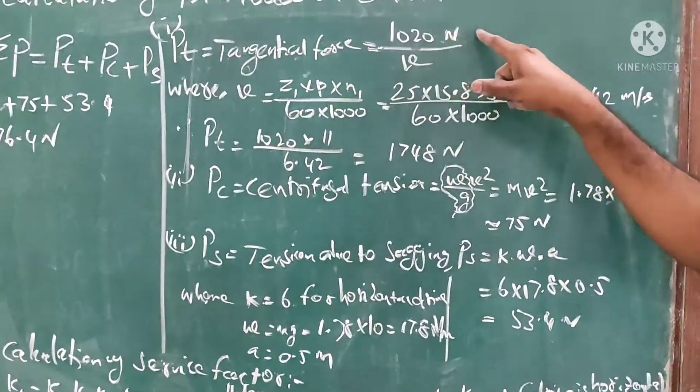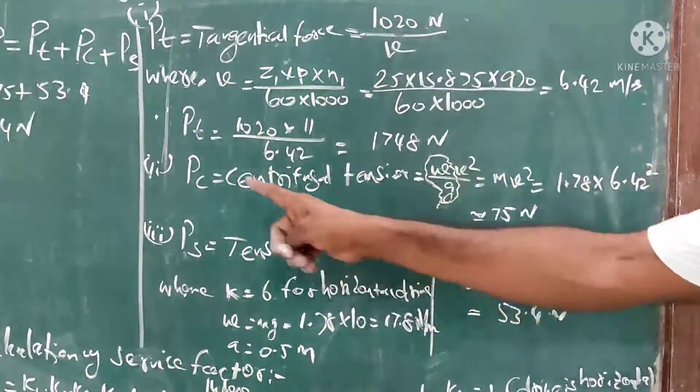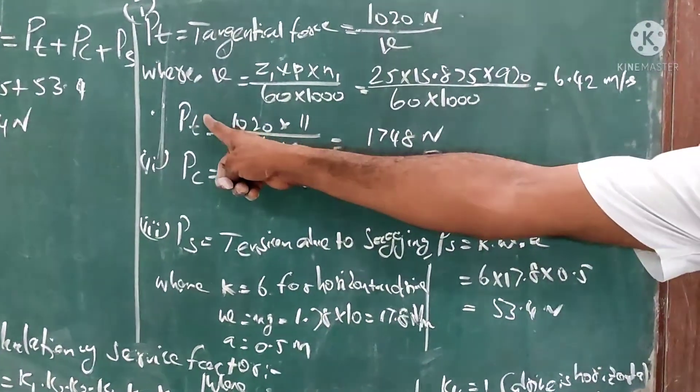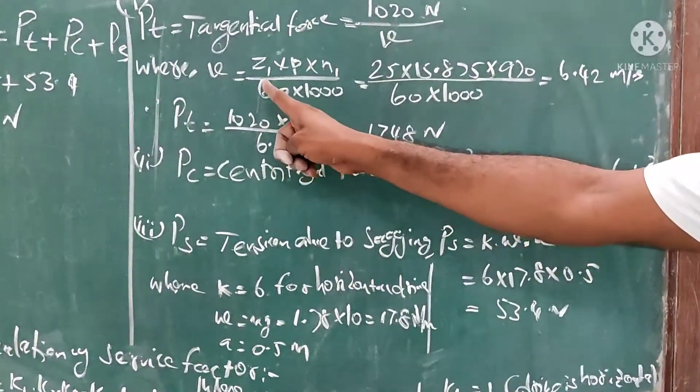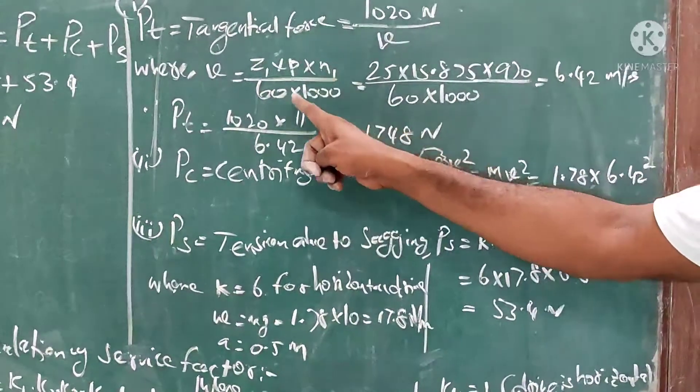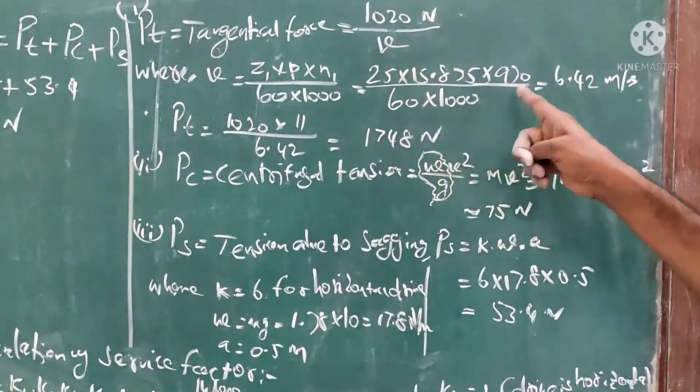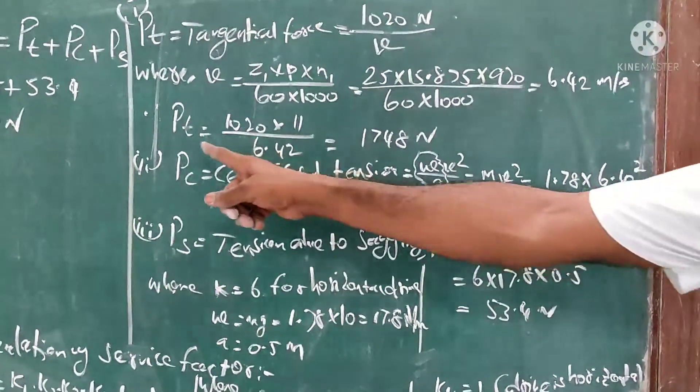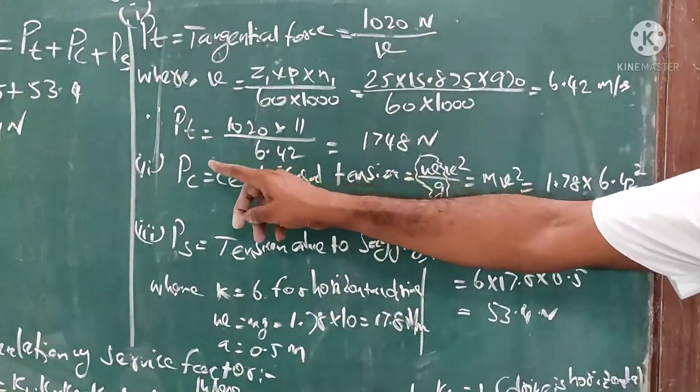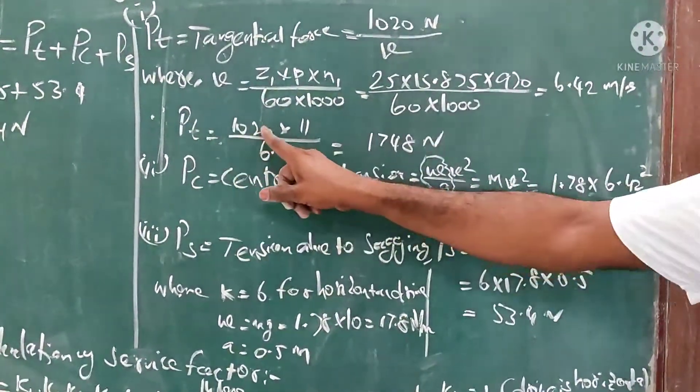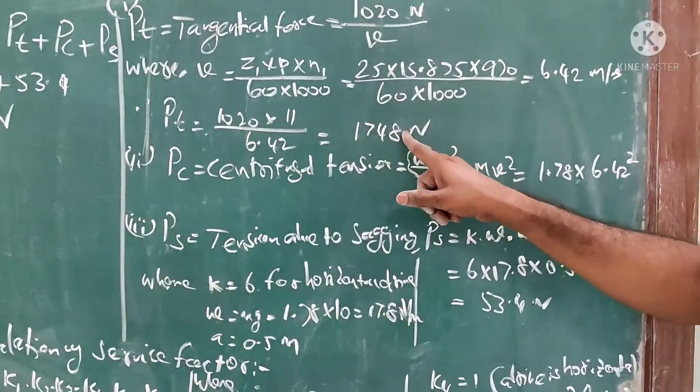Chain velocity V = z1 × p × n1/(60 × 1000). Substitute, you get 6.42 meter per second. Therefore, PT, tangential force = 1748 Newton.